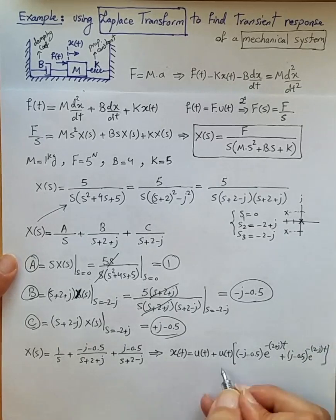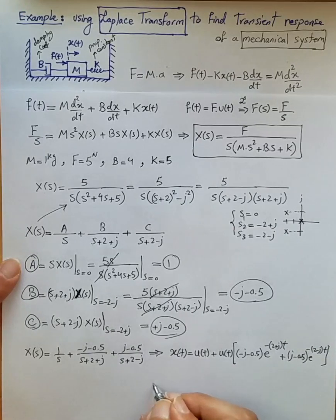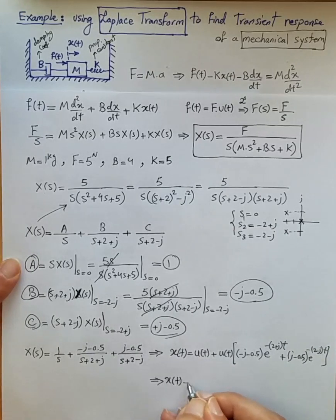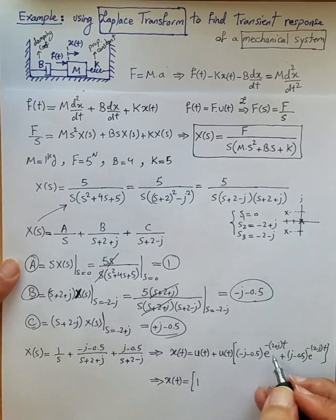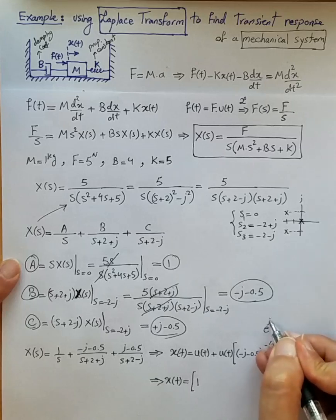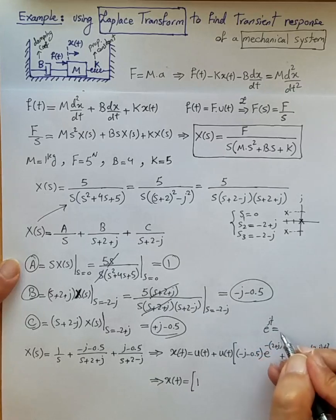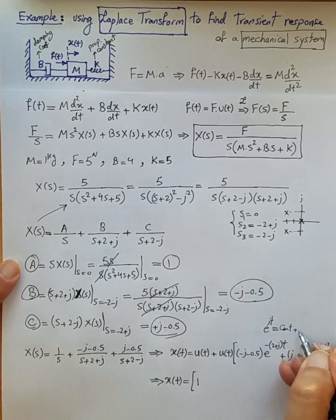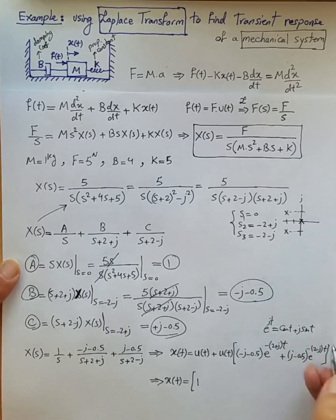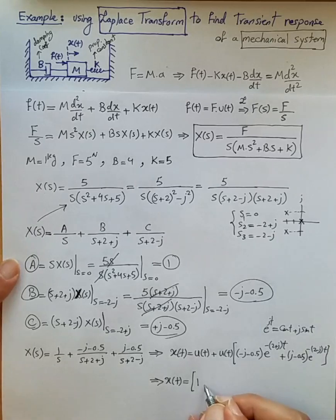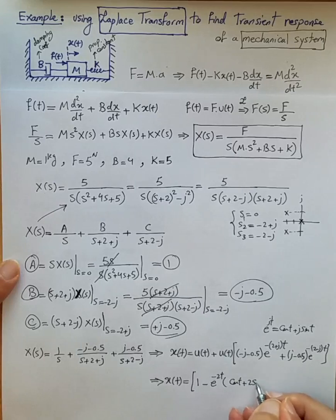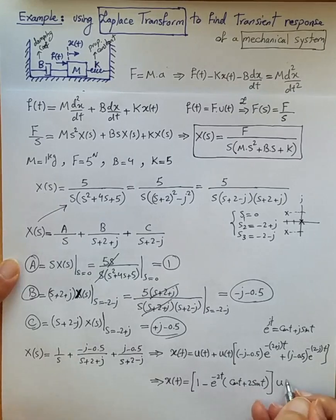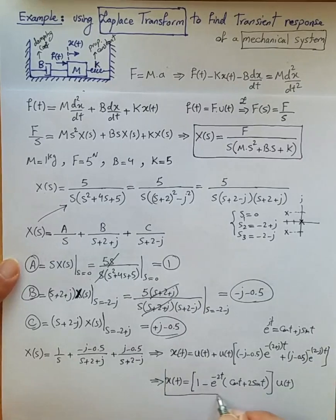Further simplifying and factoring out u(t), and using the well-known Euler equation e^(jt) = cos(t) + j·sin(t), we end up with x(t) = [1 − e^(−2t)·(cos(t) + 2·sin(t))]·u(t). We have now found the transient response and the time-domain representation of the displacement.